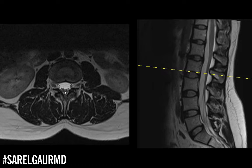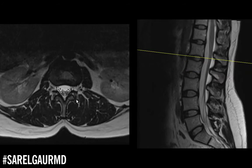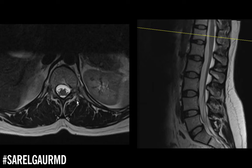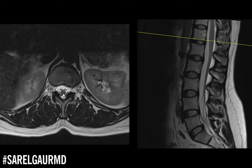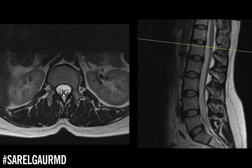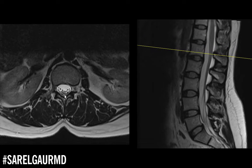Let's focus on the central canal to start. In the central canal, we're going to have a portion of the spinal cord — this is the spinal cord here. As we go lower, or caudally, we're going to see that spinal cord terminate, and we're going to get these nice rows of nerve roots floating in this white CSF.